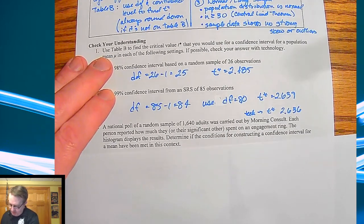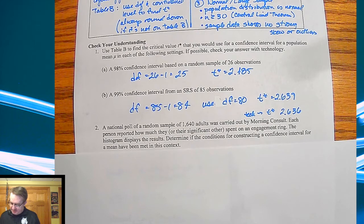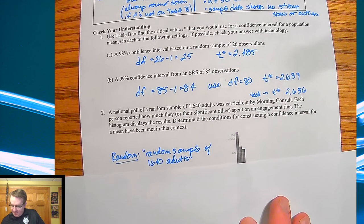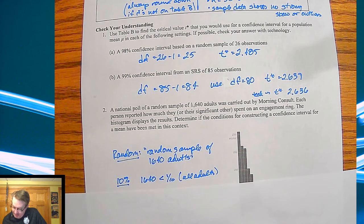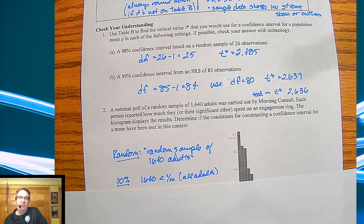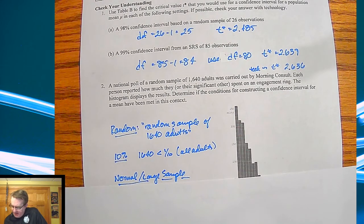National poll of 1640 adults carried out by Morning Consult, trying to see how much they spent on an engagement ring. Histogram displays results. Determining conditions for constructing a confidence interval and see if they were being met. First one, is it random? When you see the phrase random sample of 1640 adults, that's basically given. Ten percent rule: 1640 is definitely less than 10% of all Americans or all adults in the United States.